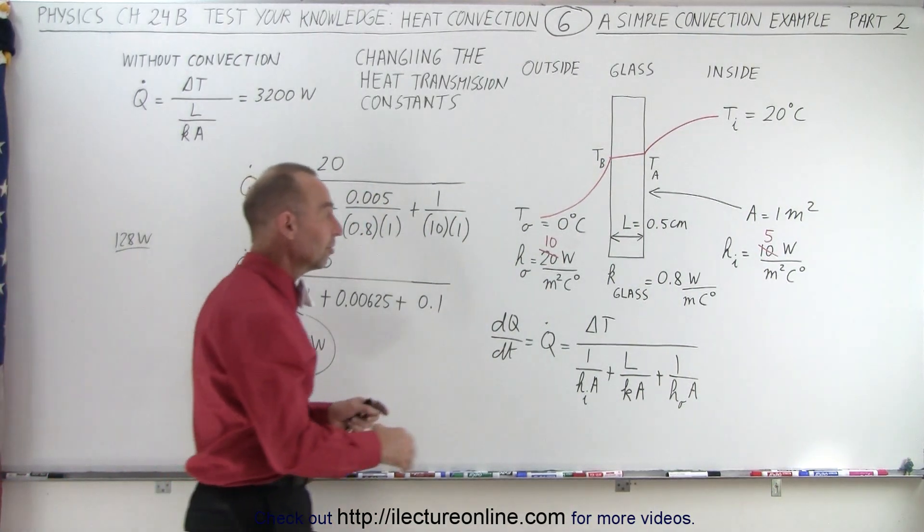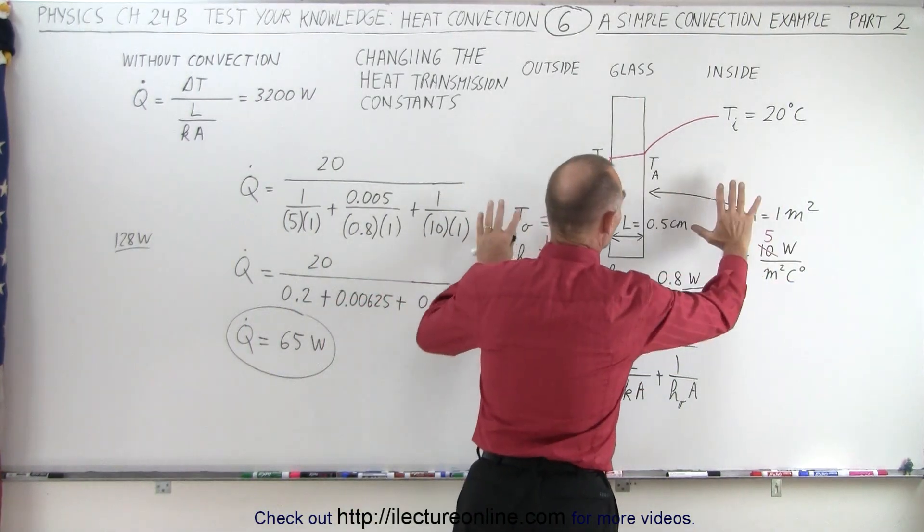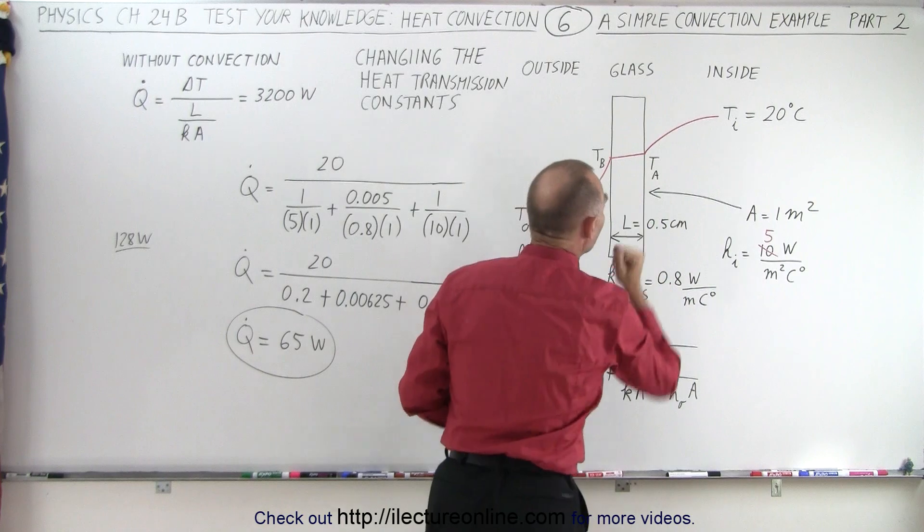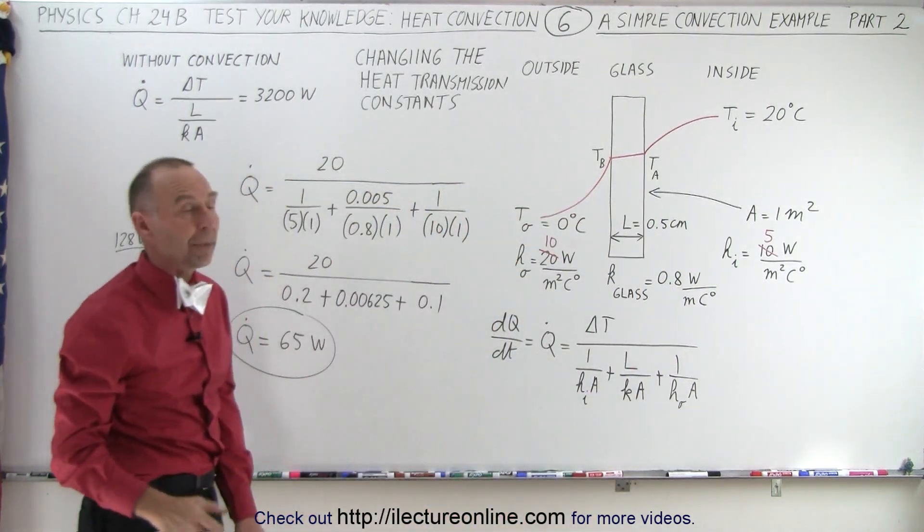So the transfer coefficients is where it's at. The convection currents really control the amount of heat flowing to the window, very little is controlled by the window pane itself.